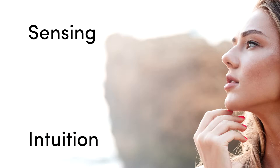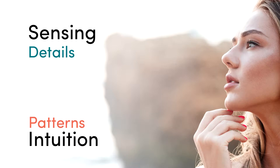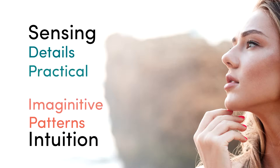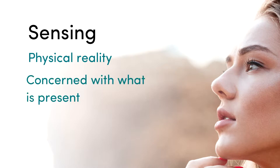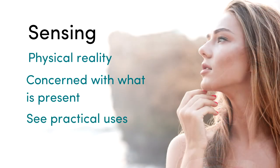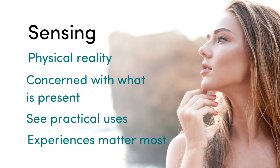In choosing sensing or intuition, the focus is on how you gather information. If you were to describe a room, what would you focus on — details or patterns? Do you consider yourself to be practical or imaginative? Sensors pay attention to physical reality: what they can see, hear, touch, taste, and smell. They're concerned with what is actual, present, current, and real. They notice facts and remember details that are important to them. Do you see the practical uses of things, and do you learn best when you see how to use what you're learning? Experiences speak louder than words to sensors.